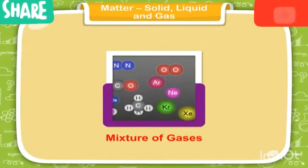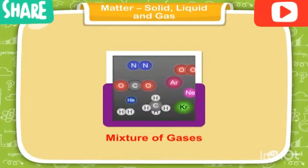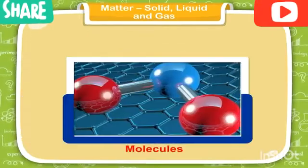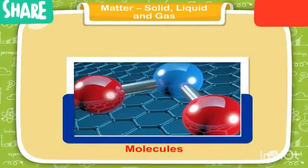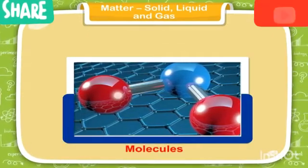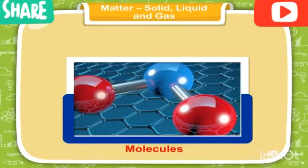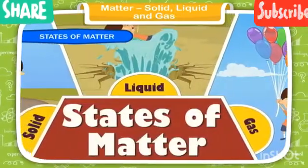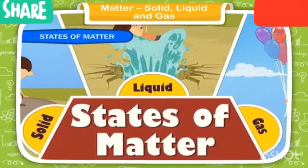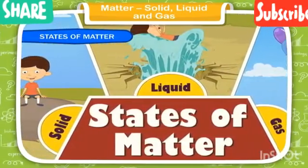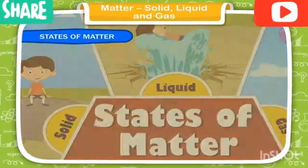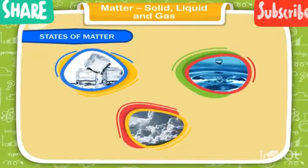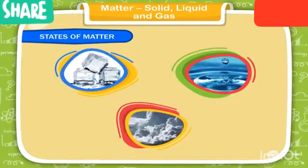Anything that occupies space and has weight is matter. Matter is made up of many substances. Even the air around us is a mixture of many gases. Matter is made up of very tiny particles called molecules. Molecules are very small and cannot be seen without a microscope.